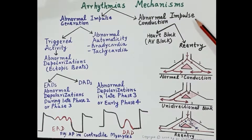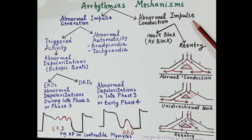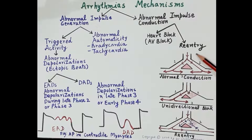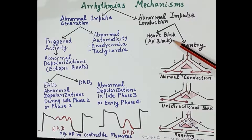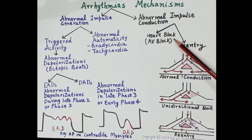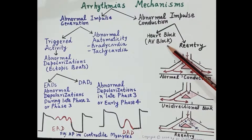The second mechanism responsible for arrhythmia is abnormal conduction of impulse, which can be due to heart block or the re-entry phenomenon. Heart block is blockage of conduction, normally caused because of excessive vagal stimulation. The SA node produces impulses, but these impulses are not normally conducted through the AV node — there is AV block — and that causes arrhythmia. This type of arrhythmia is termed a heart block.